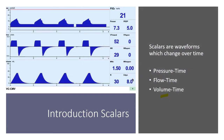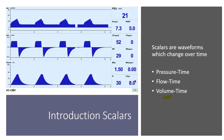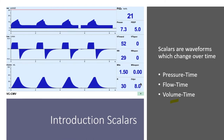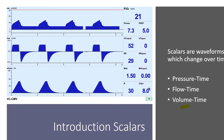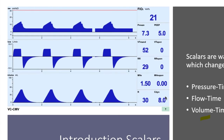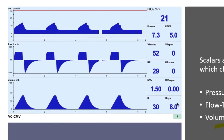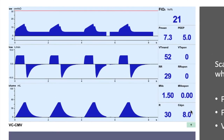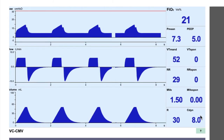Scalars are waveforms that change over time, and there are three that are very important during ventilation. At the top we have the pressure-time waveform — how does pressure vary over time. Then we have the flow-time scalar — how flow varies over time. And we have the volume-time scalar — how volume varies over time.